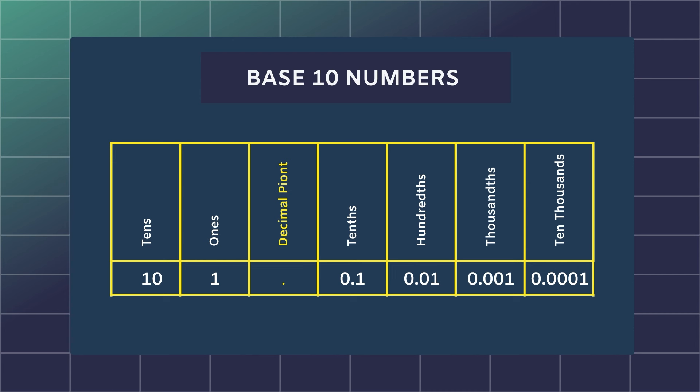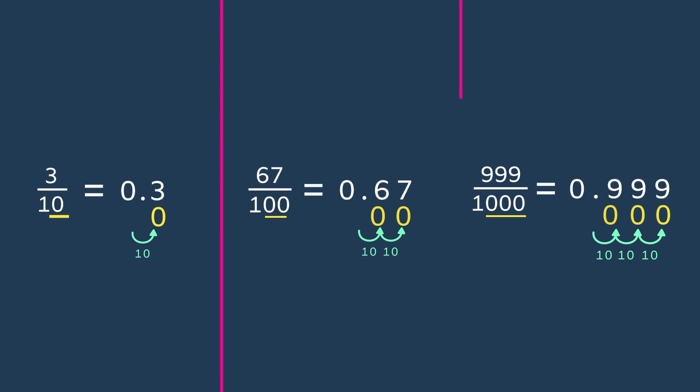These numbers are called base 10 numbers like tens, hundreds, thousands and ten thousands. A cool trick to remember is that the amount of zeros in your base 10 number will tell you how many digits should follow the decimal point. Every time the base 10 increases from 10 to 100 to 1000, it shifts one spot to the right.